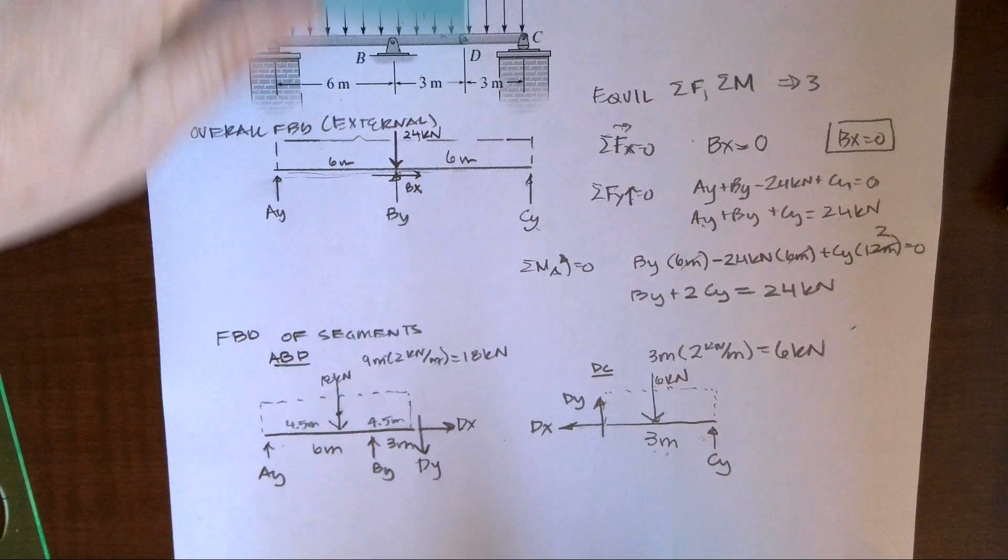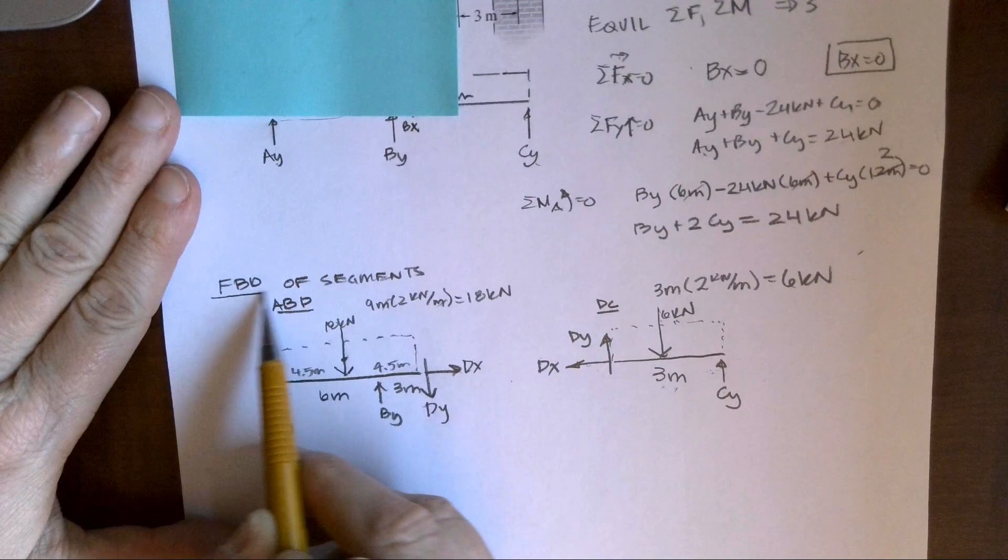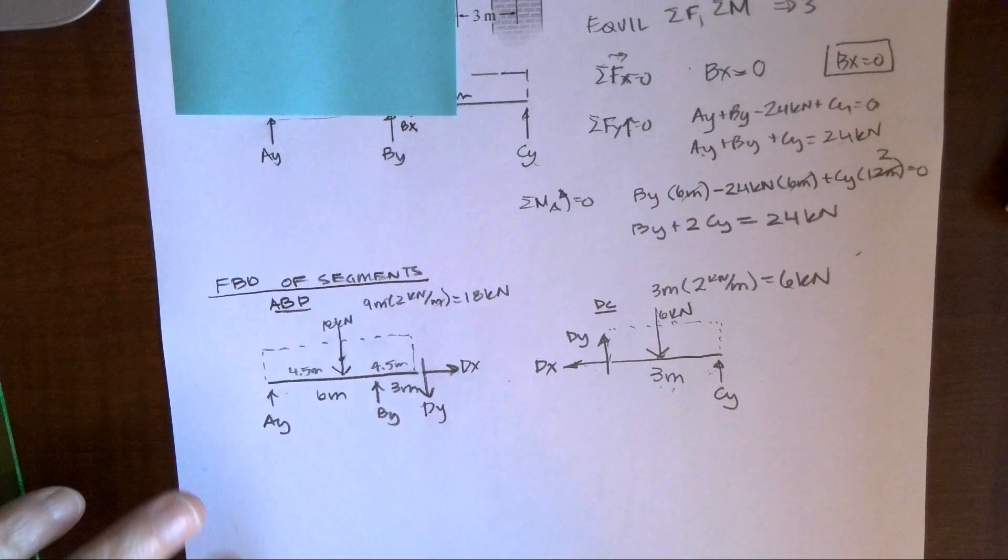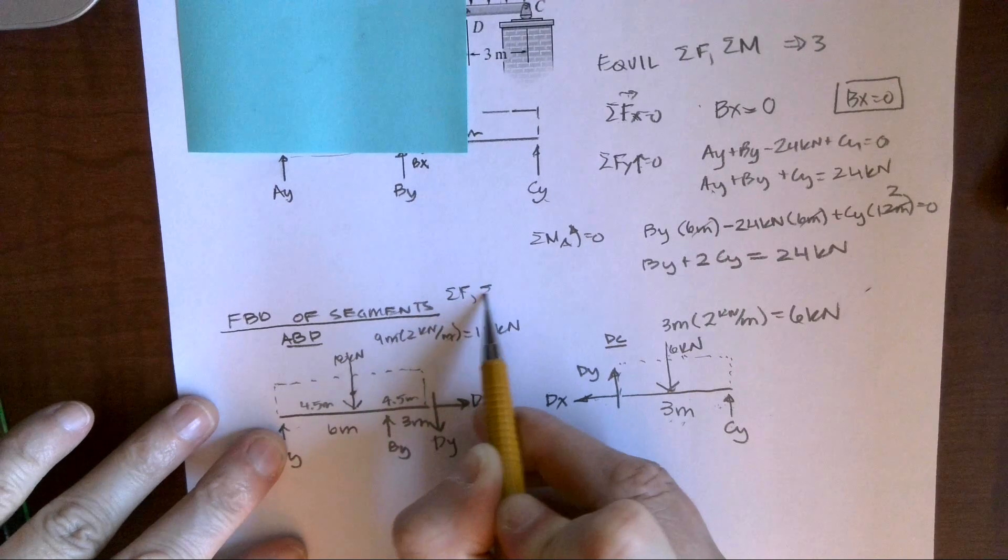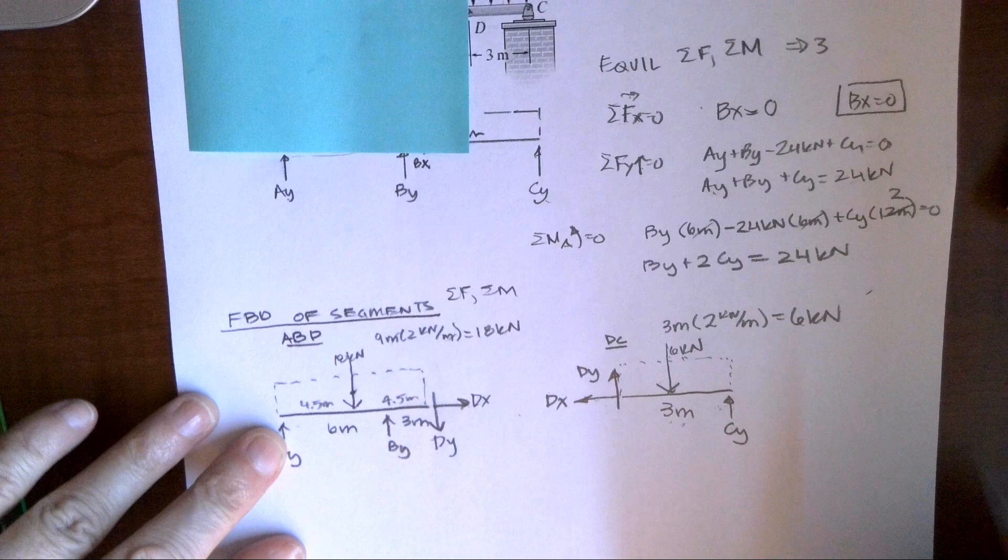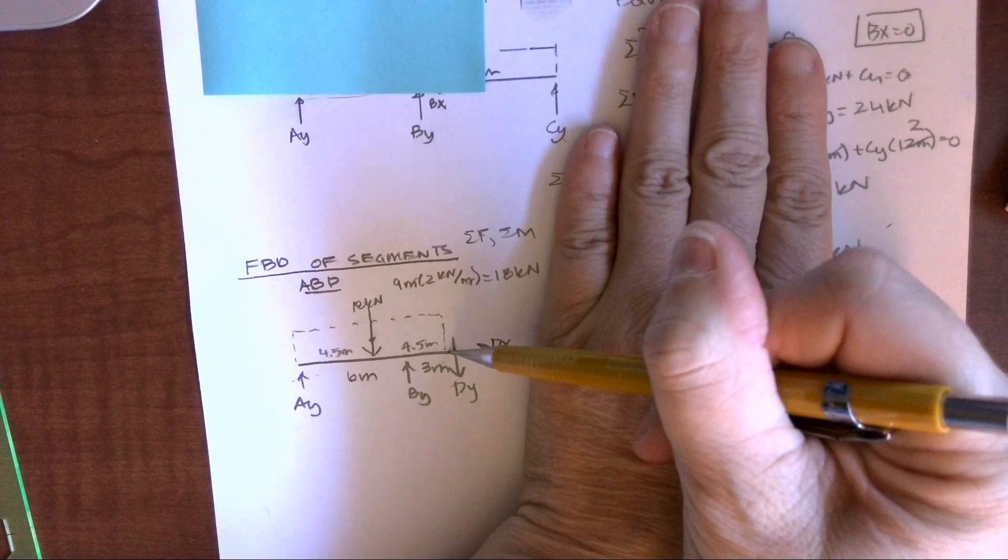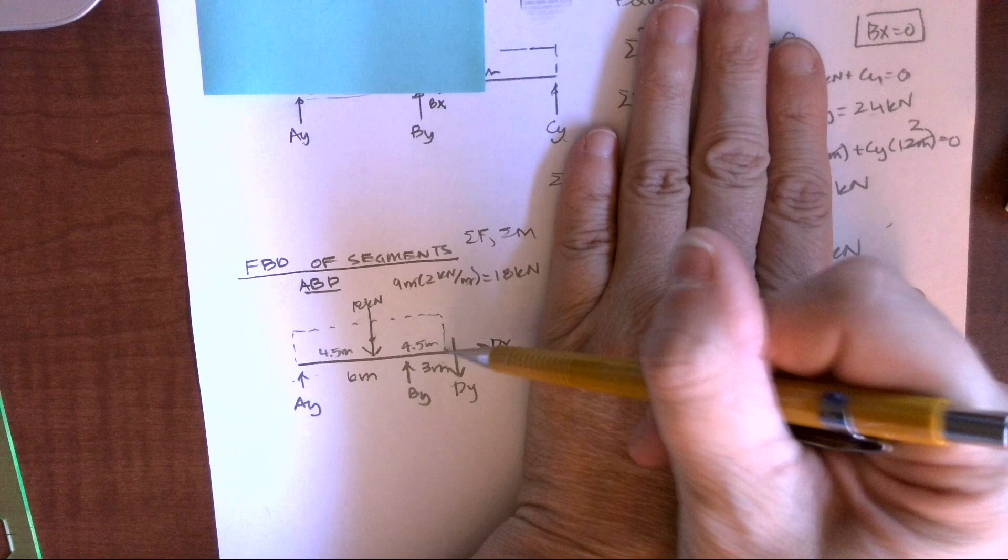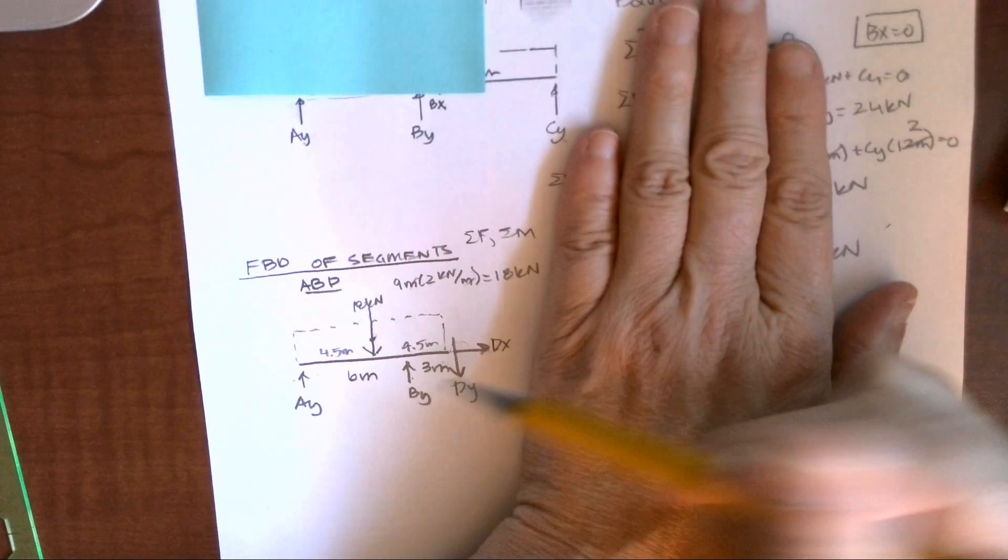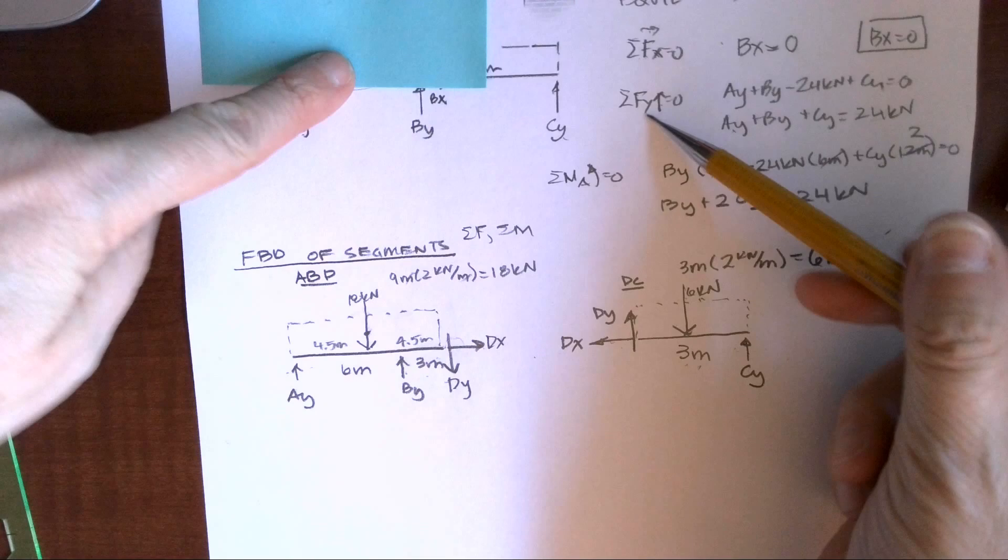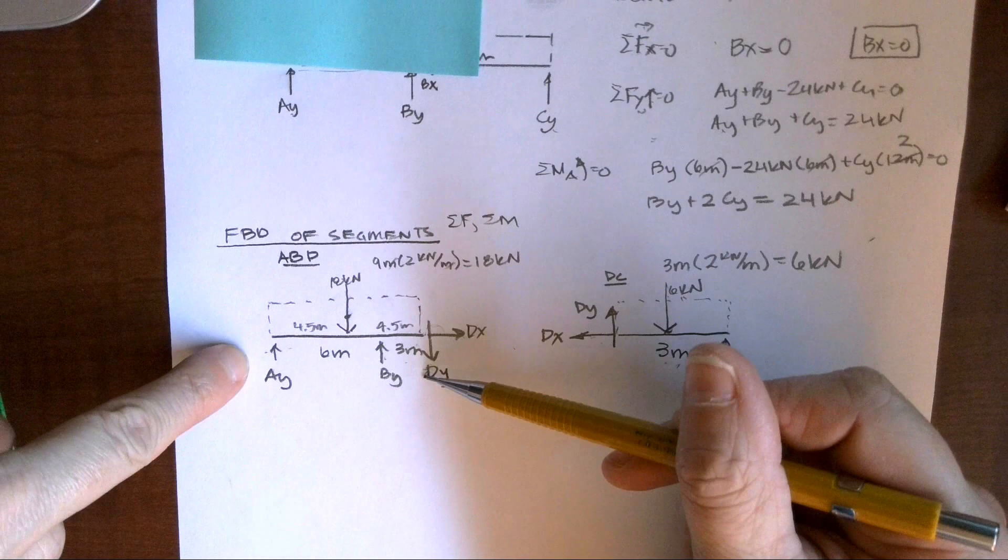So, knowing that we have equilibrium equations, I can start with either section. I can still sum forces and sum moments. If I look at my left section, ABD, if I were to sum moments about D, which gets rid of my unknowns here, I still have an unknown AY, and BY. If the same scenario is up here, then I have three unknowns in the Y direction. That's not helpful. So, now let's look at D to C.